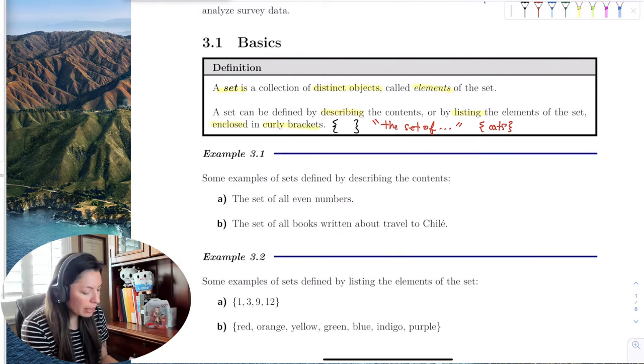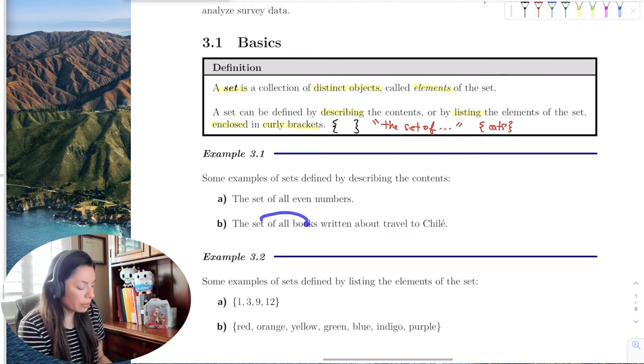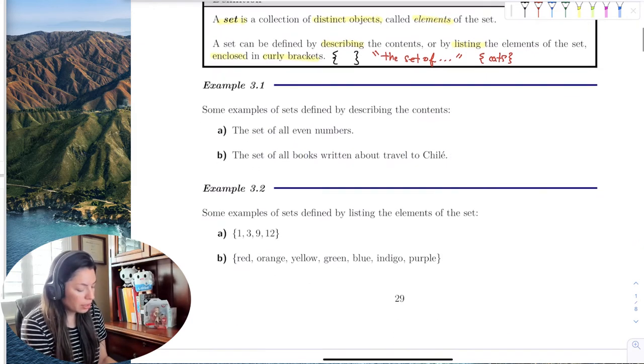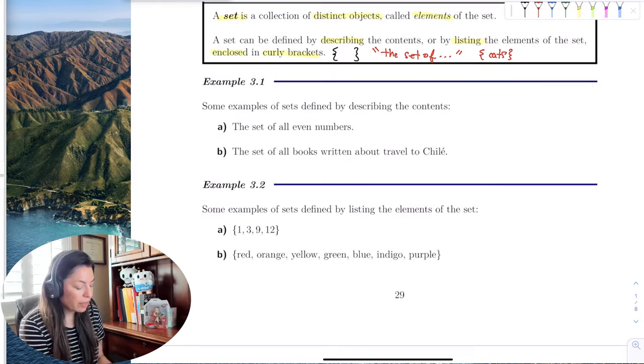So some examples: the set of all even numbers, the set of all books about Chile. So some examples to define, some examples of sets with elements. The elements of are 1, 3, 9, and 12.